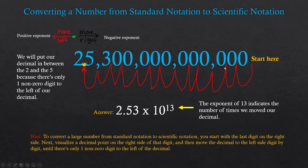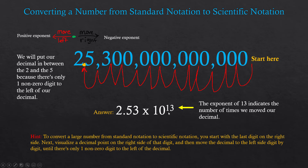So let's go ahead and count: 1, 2, 3, 4, 5, 6, 7, 8, 9, 10, 11, 12, and 13. We're going to write 2.53 times 10 to the 13th power. The exponent of 13 indicates the number of times we moved our decimal — the amount of times we went from the right to the correct position was 13 times, and that's where we get the 13th from.